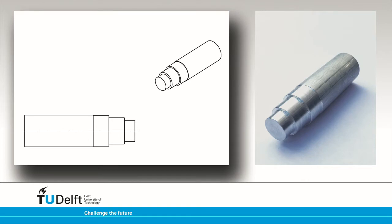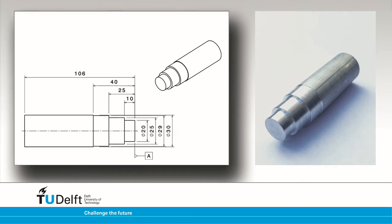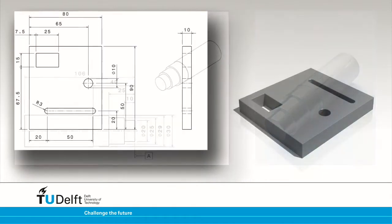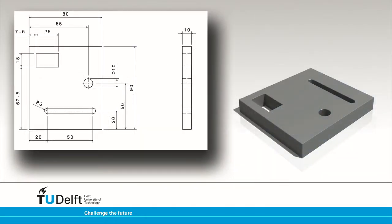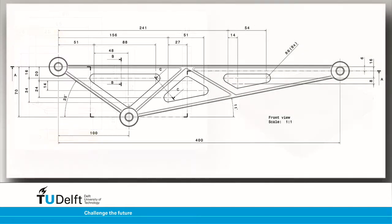The dimensions of the part are placed as follows. Note, the combination of a size and a position dimension can look like a chain dimension, but this combination is allowed. In the triangular crank, the middle lightening hole height is 24mm located at 20mm from the datum feature, just like the left lightening hole has a 34mm height located at 16mm from the datum.